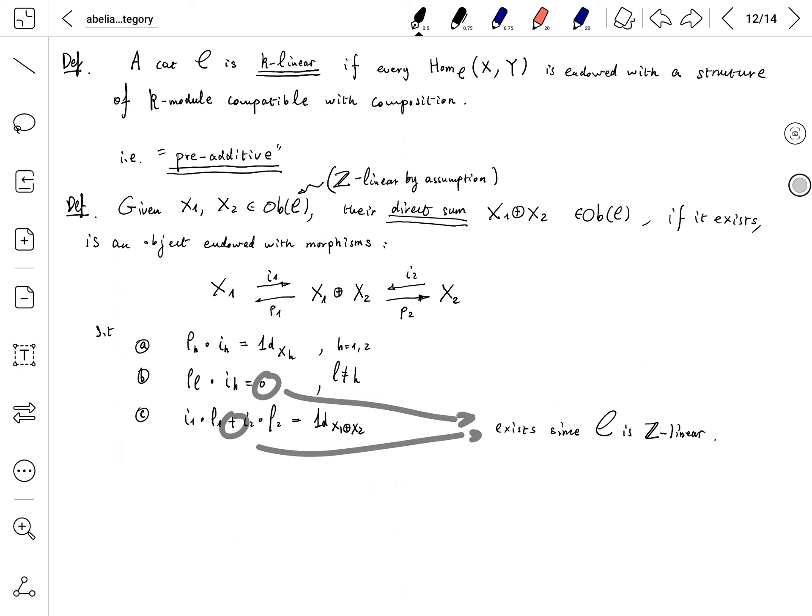Which means that (F+G) compose H equals F compose H plus G compose H. This addition comes from the structure of Z-module. The composition is bilinear.